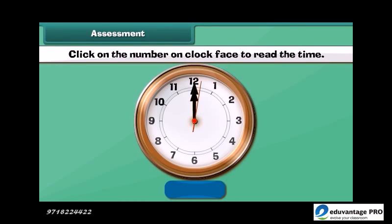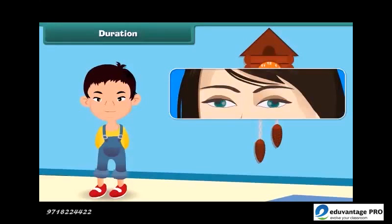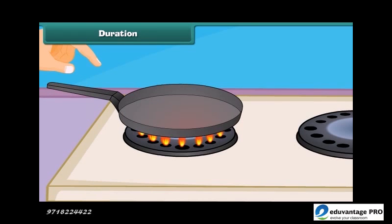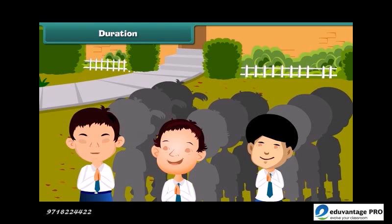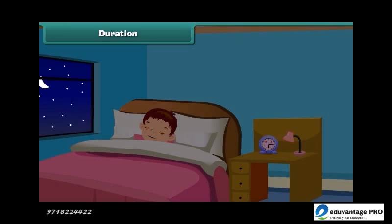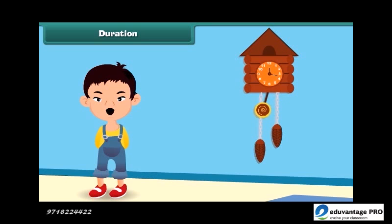Click on the number on the clock face to read the time. Can you tell me how much time we take to blink our eyes? Yes, it takes only a few seconds. Similarly, when we touch a hot object, we take our hand back in a few seconds. But when we go for a morning prayer in school, it takes a couple of minutes rather than a few seconds. Similarly, it takes an hour to sleep at night. So we can say that some activities in our daily life take more time than others.